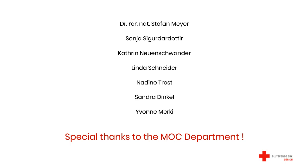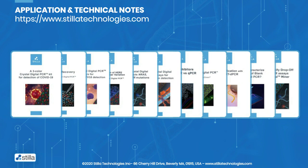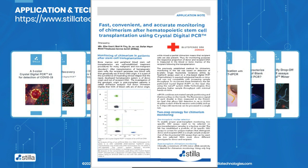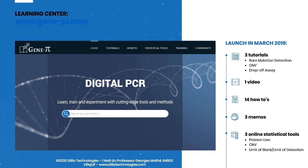If you're interested in learning more about how Crystal Digital PCR can help in your own lab, please visit us at stilatechnologies.com. Beside our brand new application note for chimerism analysis, you can find other technical application notes as well as technical notes on oncology topics, pathogen detection, copy number variation detection, and basic topics such as how to evaluate your lower limit of blank or a direct comparison of qPCR and Crystal Digital PCR. We also invite you to our learning center at www.gen-pi.com, where you can find simple setup tutorials, useful statistical tools, and digital PCR news.